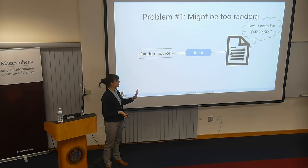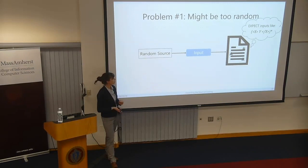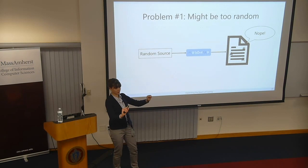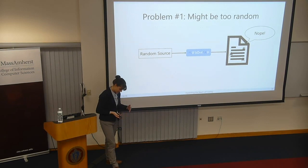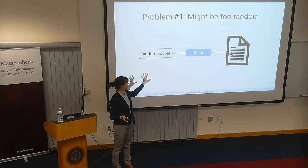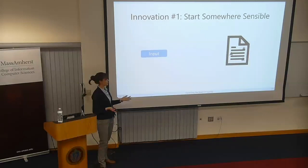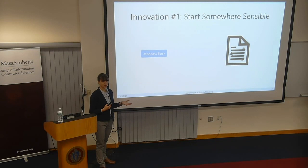But when we're actually thinking about finding interesting bugs in software, this is only going to get us so far. When your program expects inputs with a certain structure — something like XML — and you're sending complete garbage, once you've fixed those really shallow bugs, your program is just going to reject the input. So one idea is that instead of starting from complete randomness, we can start somewhere sensible — from a reasonable input like an actual JPEG file.